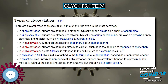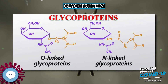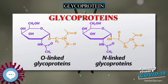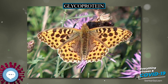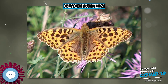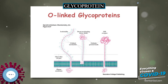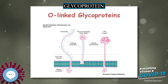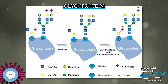The sugar groups can assist in protein folding, improve protein stability, and are involved in cell signaling. One example of glycoproteins found in the body is mucins, which are secreted in the mucus of the respiratory and digestive tracts. The sugars attached to mucins give them considerable water-holding capacity and also make them resistant to proteolysis by digestive enzymes.